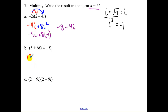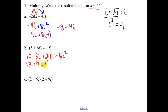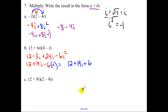The next example is just FOIL: first terms give 12, outer terms, inner terms, and last terms. When multiplying i × i you get i². Combine like terms and change that i² to negative 1. This simplifies to 12 + 19i + 6. Combine 12 and 6 to get 18 plus 19i. That is in a + bi form — remember your real part comes first.